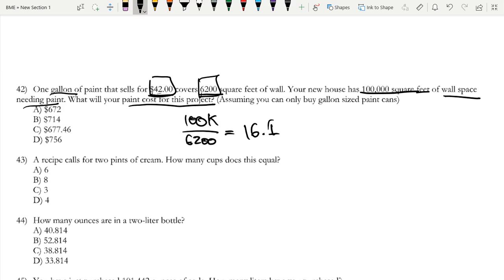And the crucial thing to realize is that we can only buy gallon sized paint cans. So this would mean that we would need 17 cans of paint. And if each is $42, we would do 17 times 42, and that is $714. That's B.